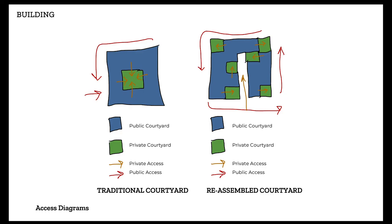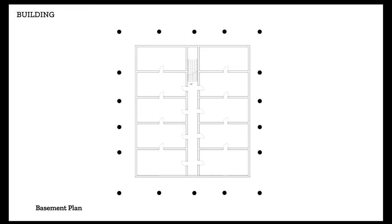When I remixed this courtyard typology, in a traditional courtyard you have public access around the building and then an extremely private courtyard. You still have private access to courtyards in this reassembled courtyard building, but it's a little more public while still being private. I also have a closed-off access point in the center — I made that access point very narrow and walled off on the opposite side so that the public doesn't feel compelled to enter. It feels private, like you would be intruding, so people stick to the outer perimeter of the building.